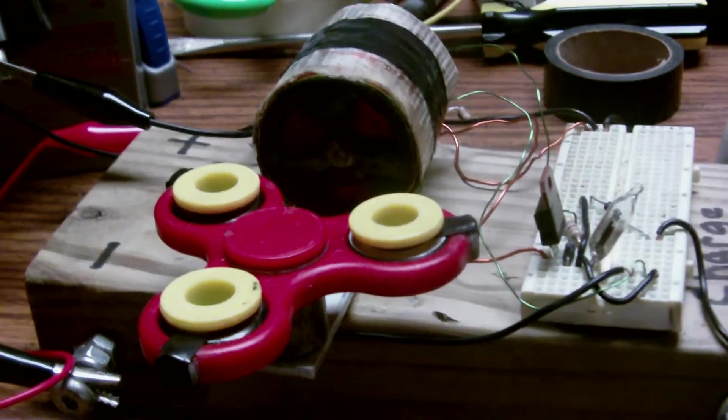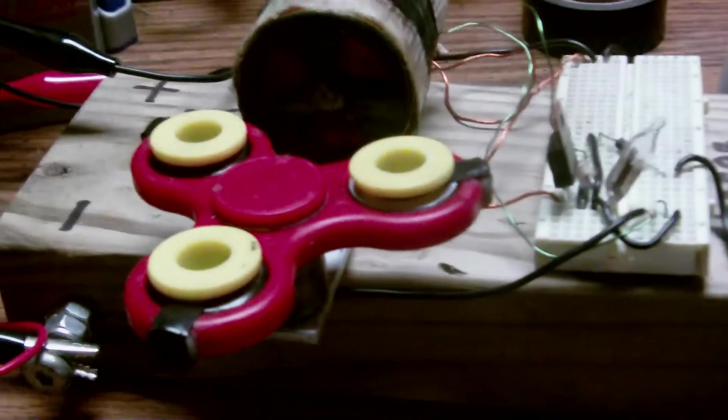You can effectively adjust the RPM of the Bedini motor and adjust it to where you get the sweet spot where you're taking the least amount of energy from the battery to run it and getting the most radiant energy off of it to charge a battery.